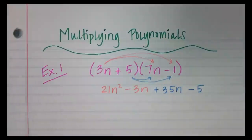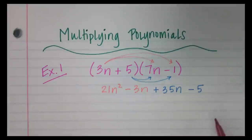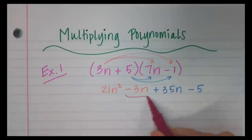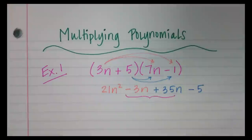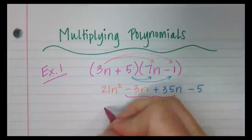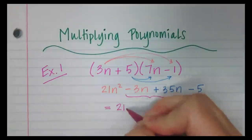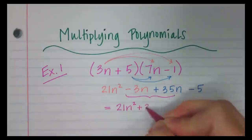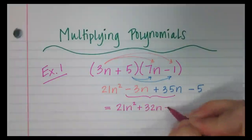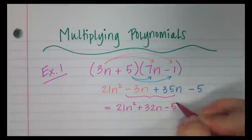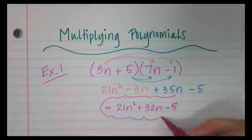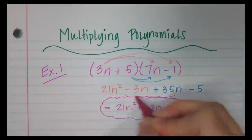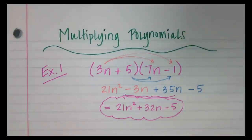So now I need to look and see if my answer is in the right order and if I can simplify it more. I can, because right here I have like terms. So the final answer is going to be 21n squared plus 32n minus 5. That is the answer when I multiply these polynomials together.